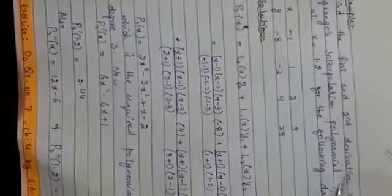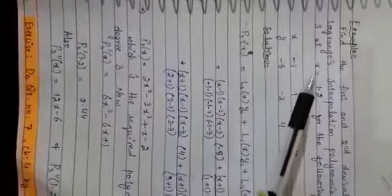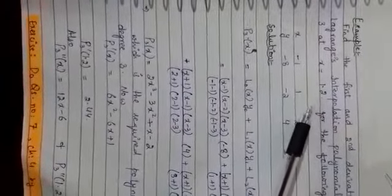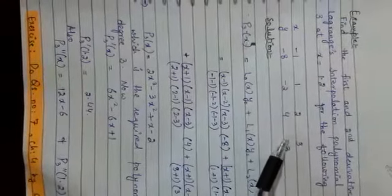Okay, come to the example. This is your example, and you have to find the first and second derivative of Lagrange's interpolation polynomial of degree 3 at this point for the following question. You can see, this is of course unequally spaced data.